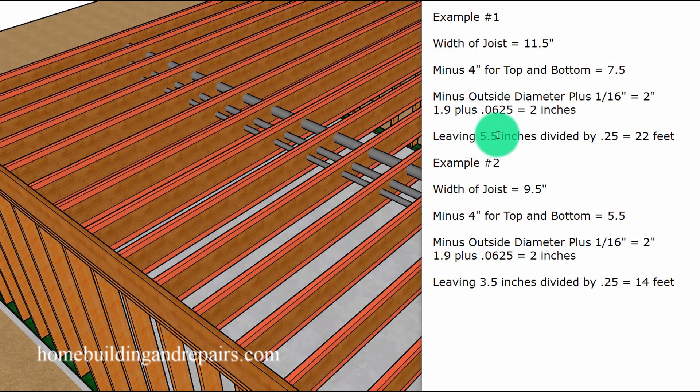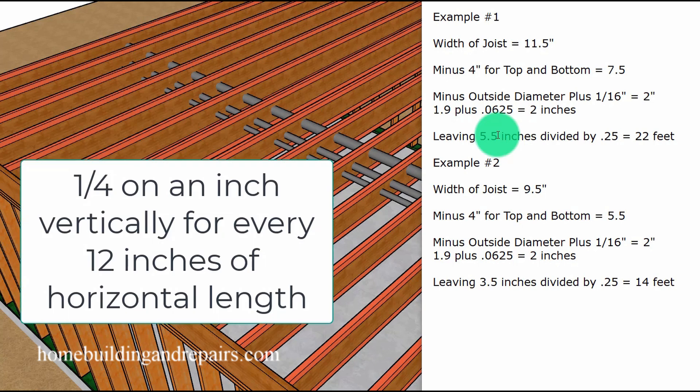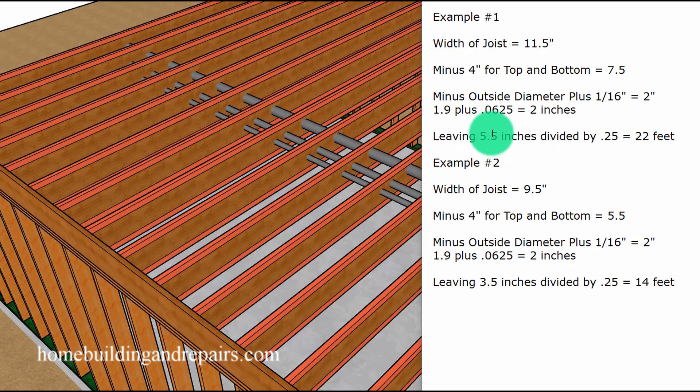And since I know that the slope of our pipe needs to be a quarter of an inch, then all we would need to do is divide 0.25 into 5.5 inches to figure out that 22 feet will be the maximum length that we would be able to install a one and a half inch pipe in two by 12 floor joist.